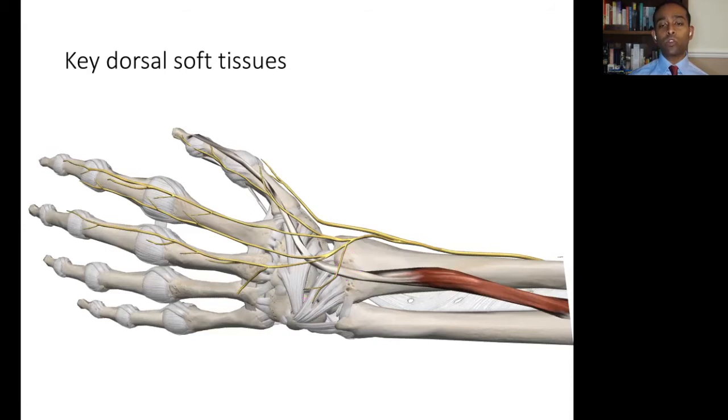Deeper still, we can see the dorsal radiocarpal ligaments and the dorsal intercarpal ligaments, which are key stabilizers of the wrist.